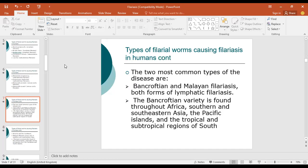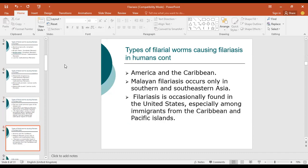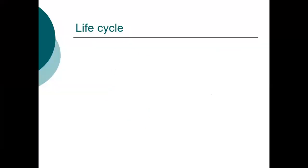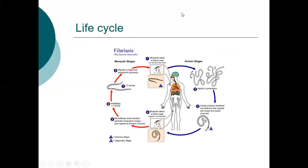We can now look at the life cycle of elephantiasis. For any tropical condition, you need to know the life cycle. On stage one, a mosquito taking a blood meal bites a human being who is the definitive host, and deposits the filarial worm larvae — at larval stage three — into the blood of this particular human being.